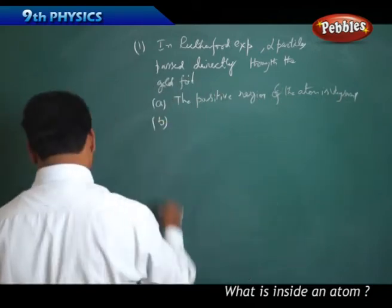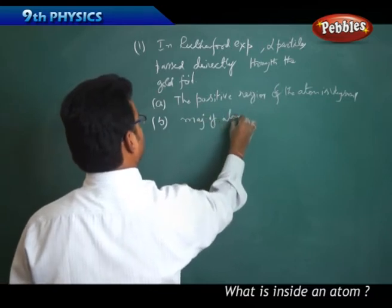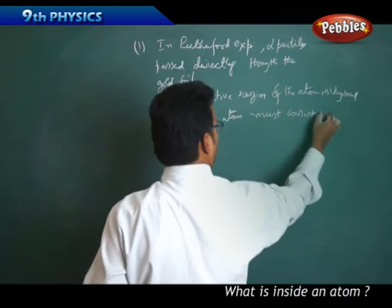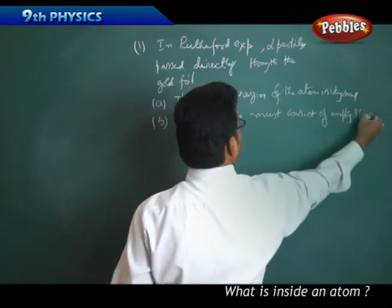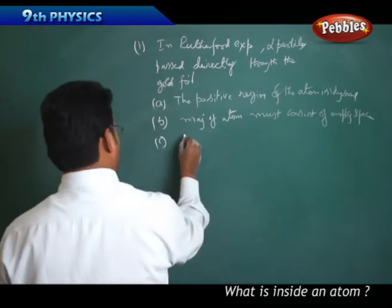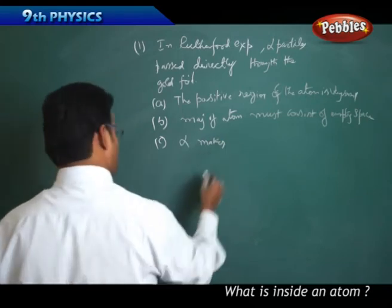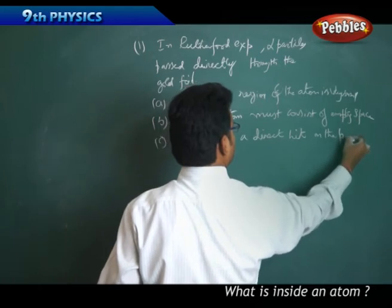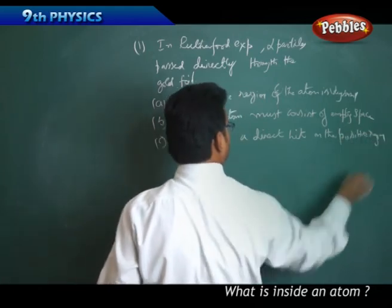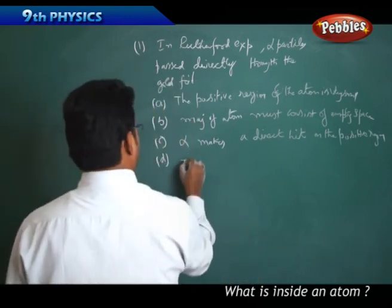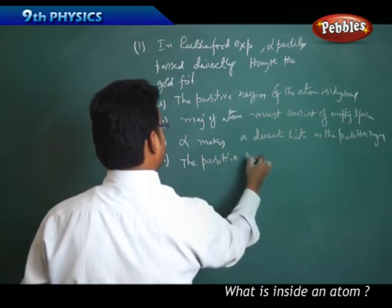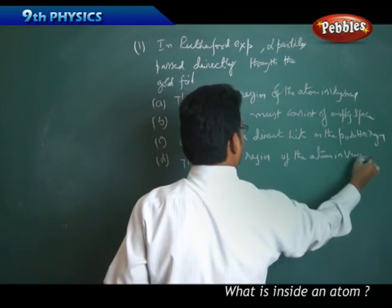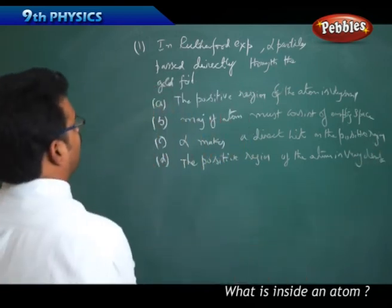Option B: Majority of atom must consist of empty space. Now see, alpha particles passed directly through. Now see the option and think.